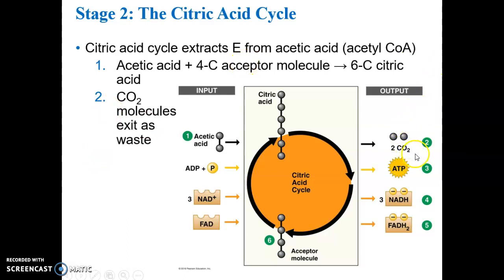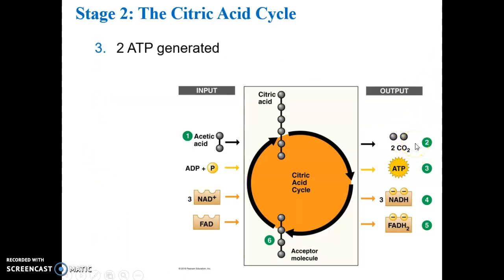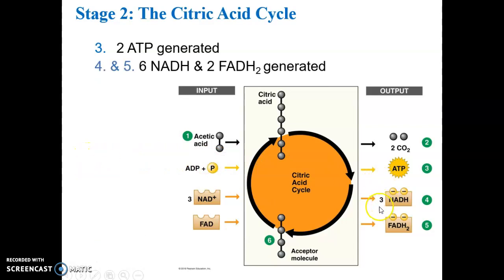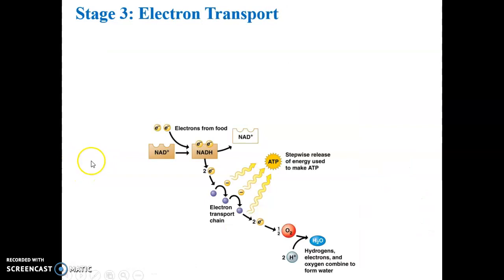Those carbon dioxides are kicked out — ultimately you exhale and breathe them out into the environment. A net of two ATPs are generated; there's only one per turn, but remember two acetic acids enter for every starting glucose. Six NADHs and two FADHs are generated for every starting glucose. All those electron carriers, electrons, and the hydrogens they carry from glycolysis and the Krebs cycle work their way toward the electron transport chain.